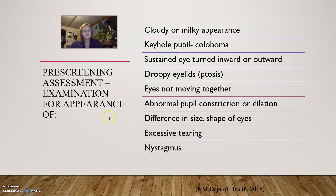For the pre-screening assessment we examine the eyes and look for a cloudy or milky appearance, a keyhole pupil called a coloboma — tissue formed irregularly in the pupil which is rare but can cause vision problems — a sustained eye turn in or out, droopy eyelids or ptosis, eyes not moving together, abnormal pupil constriction or dilation, difference in size or shape of the eyes, excessive tearing, or any nystagmus noted, which is irregular persistent eye movement.